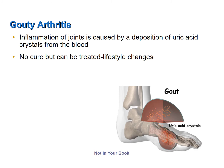Gouty arthritis, or simply gout, is inflammation of the joints caused by uric acid crystals being deposited from the blood into the joints. Gout typically begins in the joint of the big toe. Some individuals genetically have high circulating levels of uric acid in their blood, and therefore are at high risk for gout. However, there are other individuals who get gout who have normal levels of circulating uric acid in the blood, so why some individuals get gout and others do not is not completely understood.